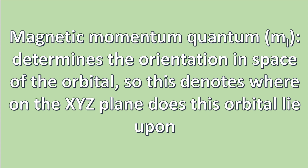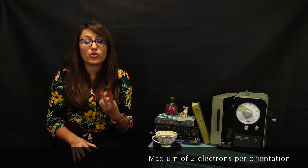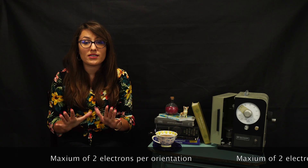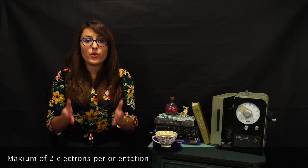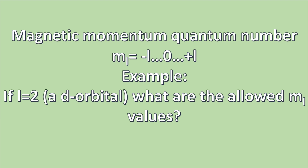The third quantum number is the magnetic quantum number, which is denoted by ml, and determines the orientation in space of the orbital — specifically where on the x, y, z plane this orbital lies. It is extremely important to note that each orientation of an orbital can hold a maximum of two electrons. The magnetic quantum number is like the street address, because we have now narrowed down the location even further. To calculate ml, it ranges from −l, including 0, to +l.